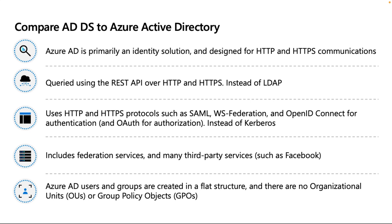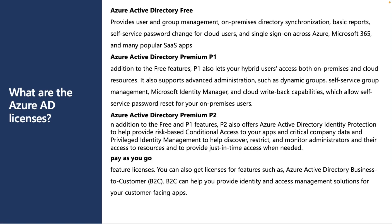For Azure AD licenses: the Free license is included automatically when you subscribe to any Microsoft cloud service. It provides user management, on-premises sync, basic reports, self-service password change in the cloud, and single sign-on for Microsoft and popular SaaS applications. Azure AD Premium P1 is an additional purchase, also available with Office 365 E3. It adds features allowing hybrid users — supporting both on-premises and cloud.